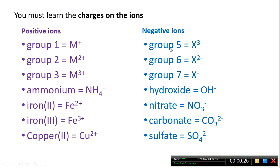Group 5, 6, and 7 also form charges relative to which group they're in. So, an ion in group 5 would have a 3- charge, in group 6 would have a 2- charge, and in group 7 would have a 1- charge.